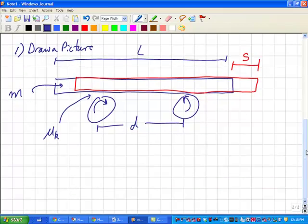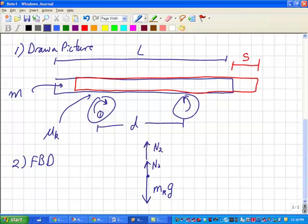And in our free body diagram, we of course have the weight of the ruler pointing downward. And we have two normal forces going up. The normal force of the ruler on the left, which I'll call number one, and the normal force of the ruler on the right, which I'll call number two. This one's one. The one on the right is number two.